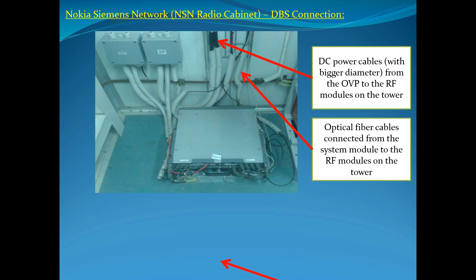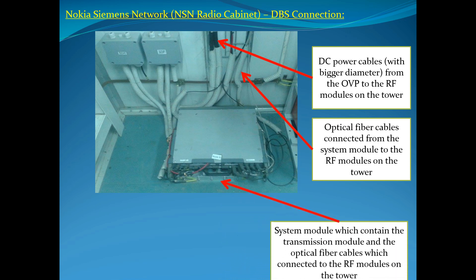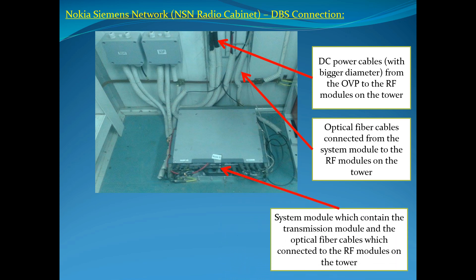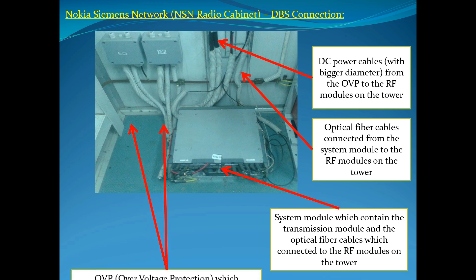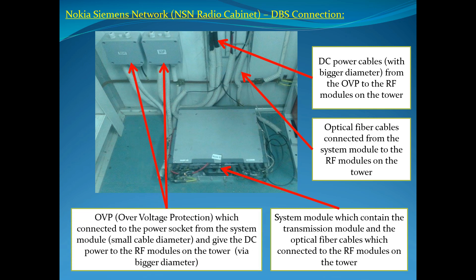System Module — which contains the Transmission Module and the Optical Fiber Cables connected to the RF Modules on the Tower. Over Voltage Protection (OVP) is connected to the Power Socket from the System Module. The System Module uses a small cable diameter to receive power and distributes DC Power to the RF Modules on the Tower via bigger diameter cables.